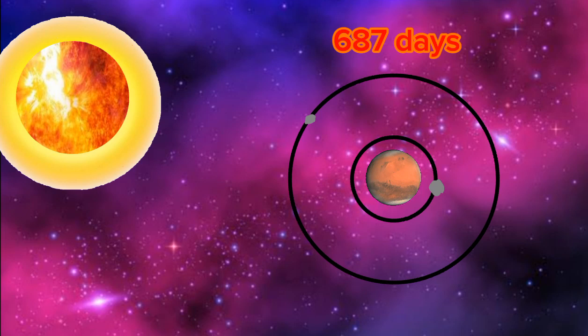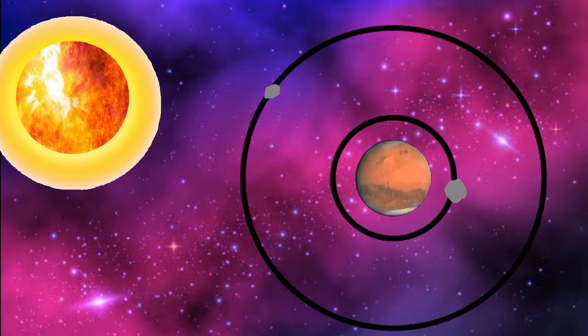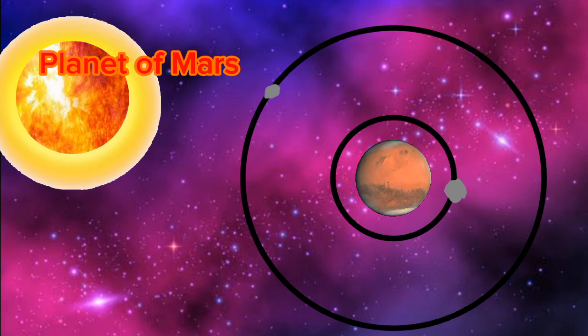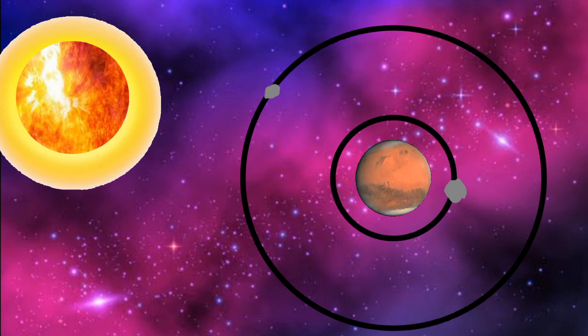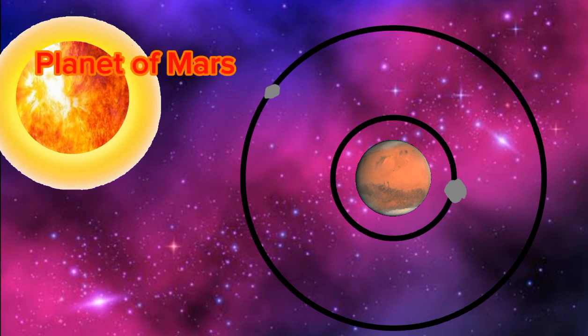687 is the amount of days it takes to orbit the sun for my year to take place. Let's visit the planet of Mars. There's so much to learn on the planet of Mars, the red planet in a billion stars. Come and sing along about the planet of Mars.